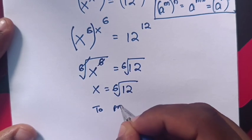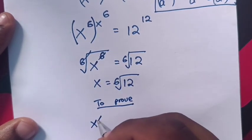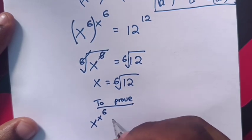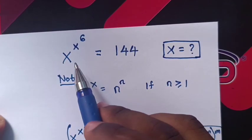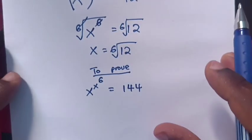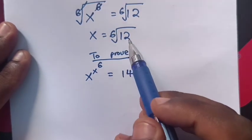Now to prove if our answer is correct, from our question, x power x power 6 equals 144. The value of x is this one, so we substitute the value of x.